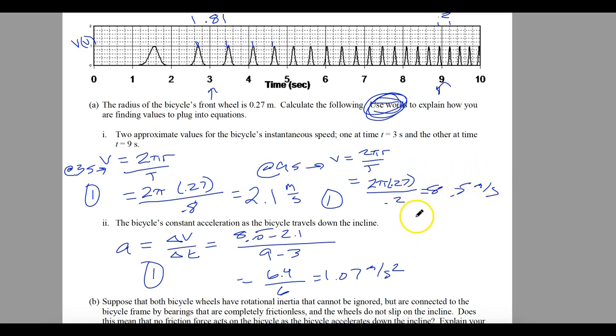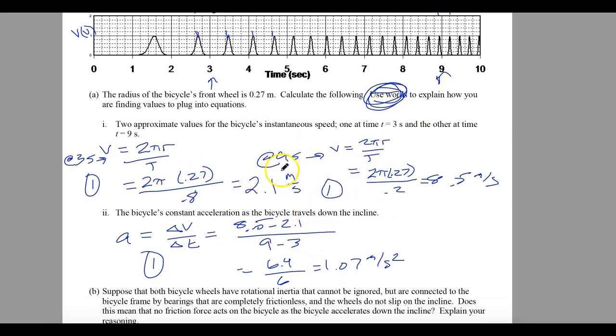The bicycle's constant acceleration as the bicycle travels down the incline is just the difference in the velocities divided by the difference in the times. One of the equations you need to memorize for the AP Physics 1 test. So 6.4 divided by 6 will give you 1.07 meters per second squared.